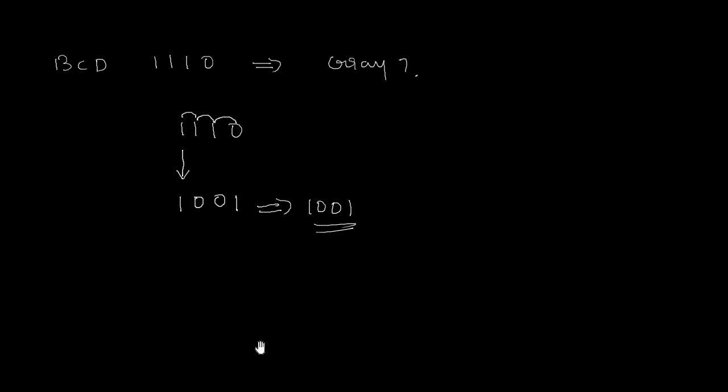I hope you understand how we can convert a binary code to grey code, how we can write the algebraic expression for the grey code converter, and how we can implement the binary to grey code converter using logic gates. Thank you for watching.